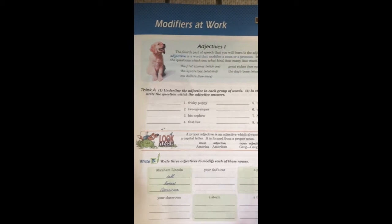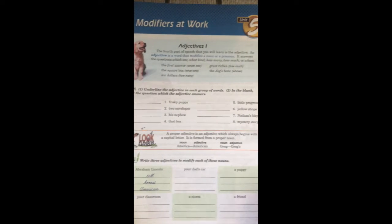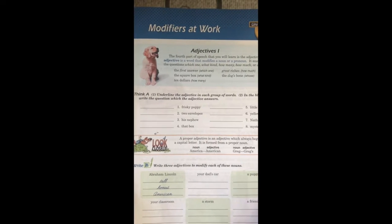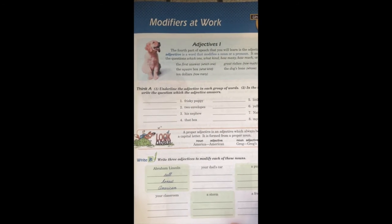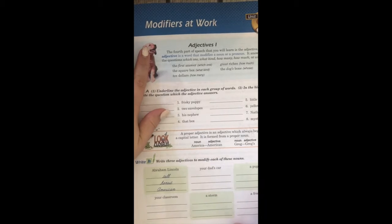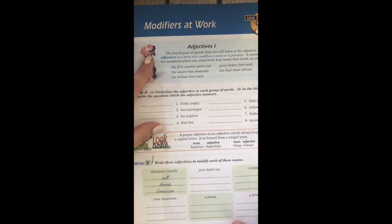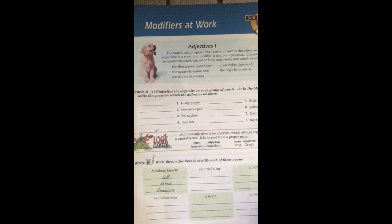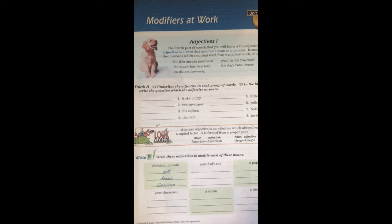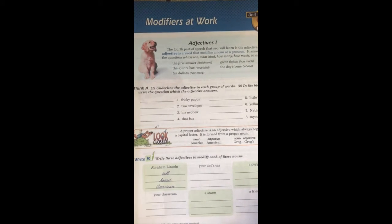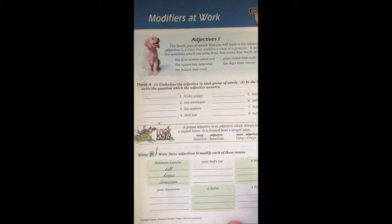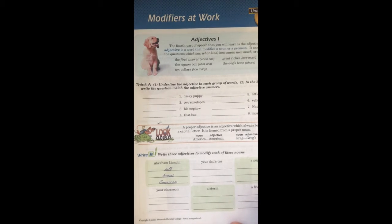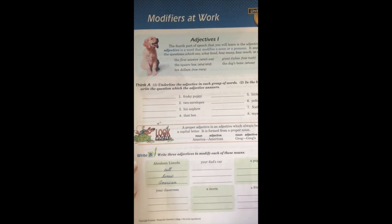For language arts on Wednesday, we are finally starting unit 5, and this one is called 'The Modifiers at Work.' We're going to learn what that means, and we're going to start with adjectives. We have already done our nouns, our verbs, and our pronouns — now we're going to learn about adjectives. You may know that adjectives are describing words, but we're going to learn even more about them and how to use them.